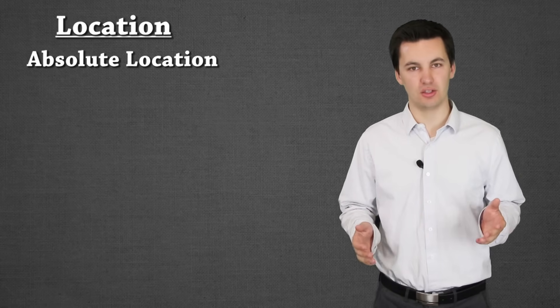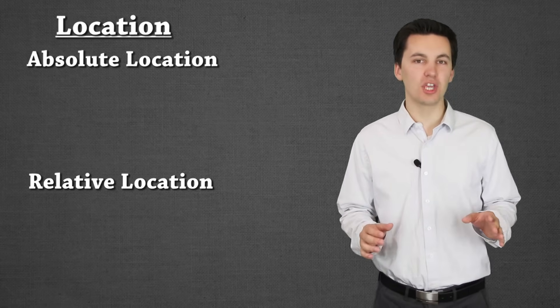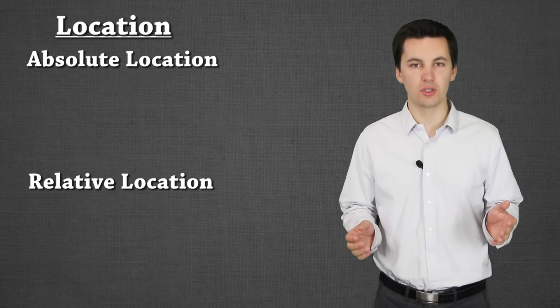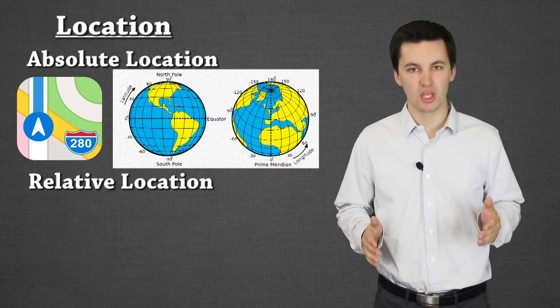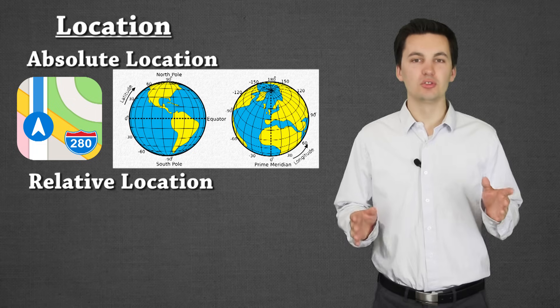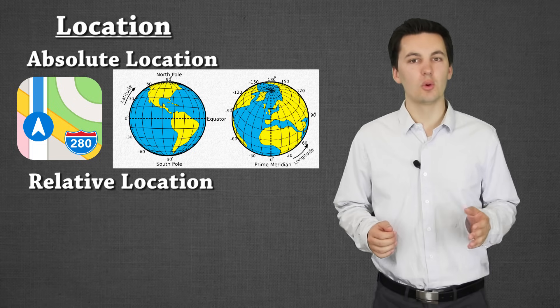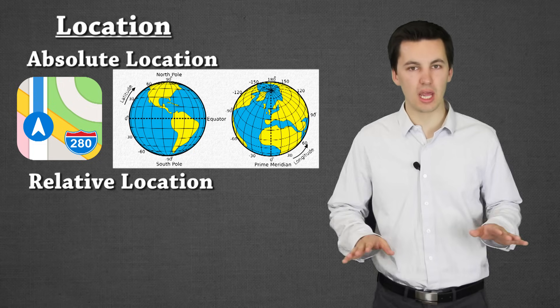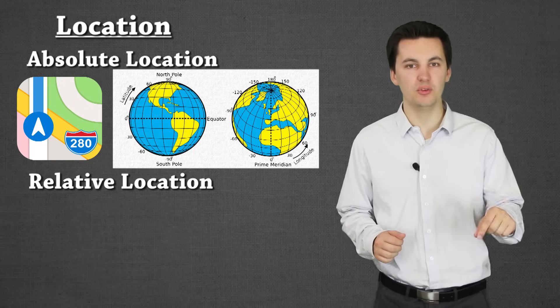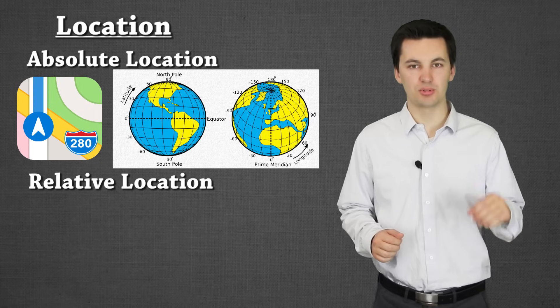Our next theme of geography is location. Now location can be broken up into two categories. We have absolute location and relative location. Absolute location, just think of your smartphone when you have to type in someone's address. It's going to be using longitude, latitude, you're going to have precise points. Absolute location never changes. Most of the time we're using longitude and latitude here. And we'll use a grid system. We can pinpoint a spot. It doesn't matter what happens there. That spot will always be the same on earth. It's absolute. It does not change.